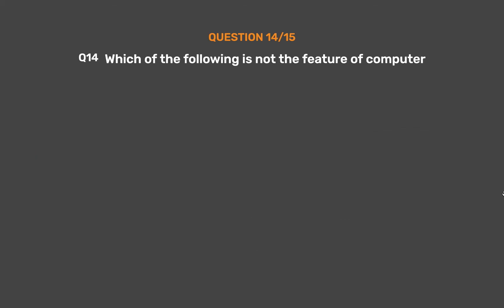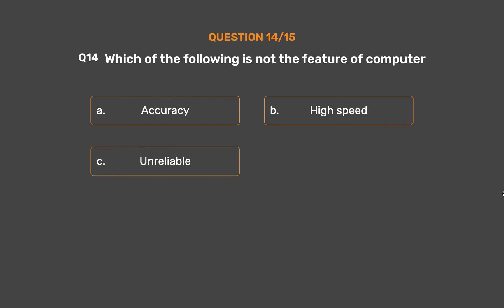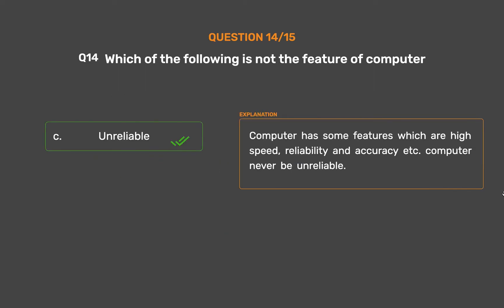Question No. 14. Which of the following is not a feature of a computer? Option A: Accuracy. Option B: High Speed. Option C: Unreliable. The correct answer is Option C — Unreliable. Computers have features such as high speed, reliability, and accuracy. A computer is never unreliable.